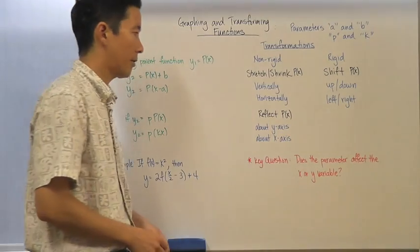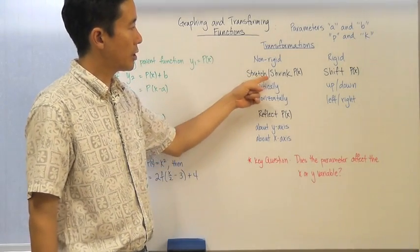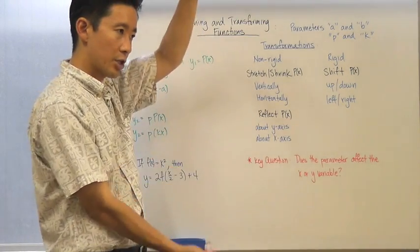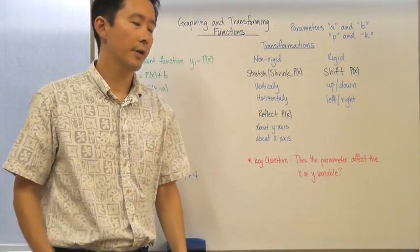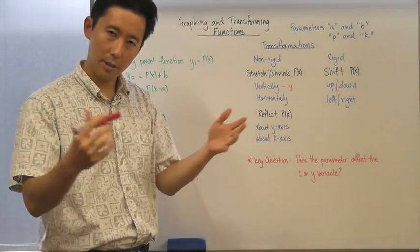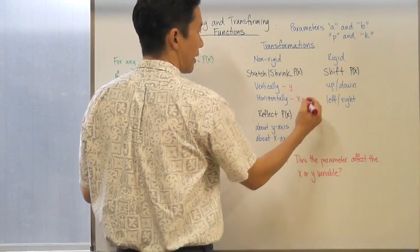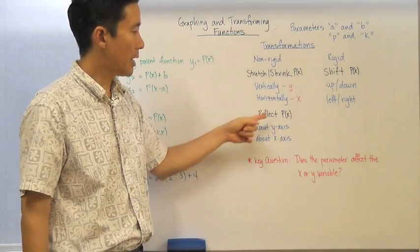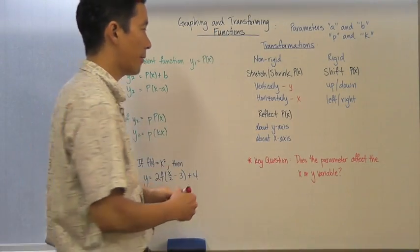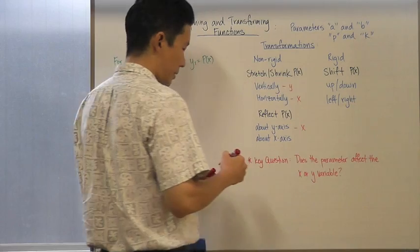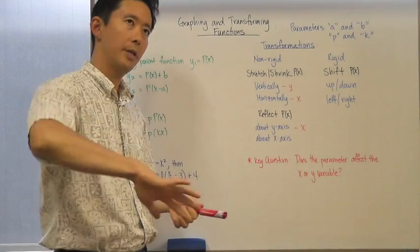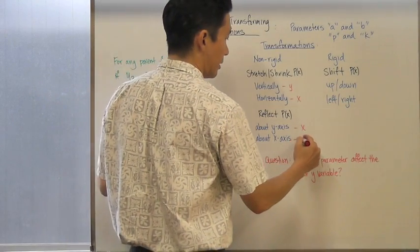If you actually stretch or shrink the parent function vertically, you're affecting the y values. If you do it horizontally, then you're affecting the x values. If you reflect p(x) about the y-axis, you're actually affecting the x values. And if you reflect about the x-axis, then you're affecting the y values.